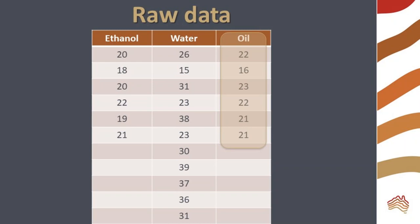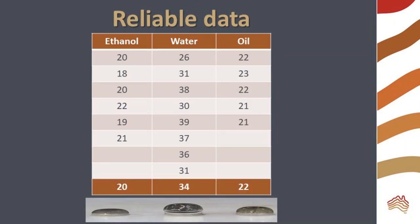The data for oil looked consistent except for the trial with 16 drops. That value is excluded. Now that the outliers have been removed, I've calculated the average of my reliable data.